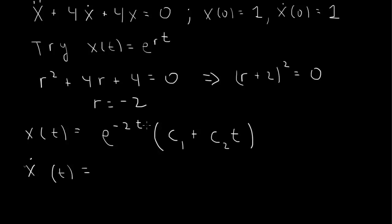So the derivative of this will always contain an e to the minus 2t. And then we have the derivative of the first times the second. That brings down a minus 2. So minus 2c1 minus 2c2t plus the first times the derivative of the second, which will give us a c2.